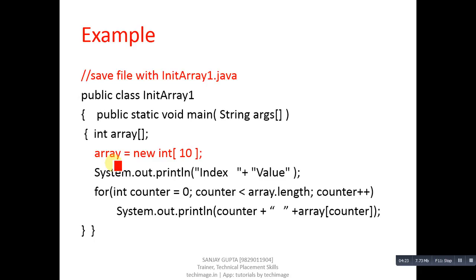int array[] is array declaration, then array equals to new int[10] - it is memory allocation to array. Then System.out.println will print this message on console: index and value. Notice that I have used plus here.